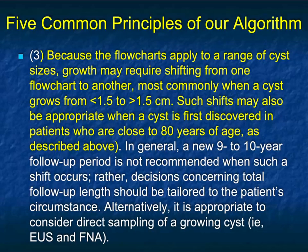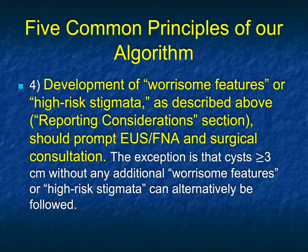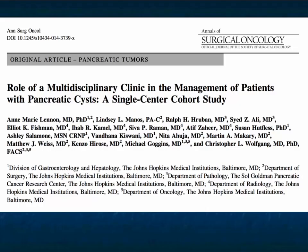The question always is: measure on the axial view or the coronal view? Axial views are only one view; coronal is better, and perhaps most accurate is the volumetric view, which nobody is actually doing. Development of worrisome features or high-risk stigmata — nodularity, thick septations, wall enhancement — then EUS and surgery is the next step. The exception is cysts over 3 cm without any additional worrisome features, which can be alternatively followed. Remember: 2 mm or less of growth per year is acceptable; over 2 mm per year increases malignancy concern. Measuring carefully and consistently is very important.